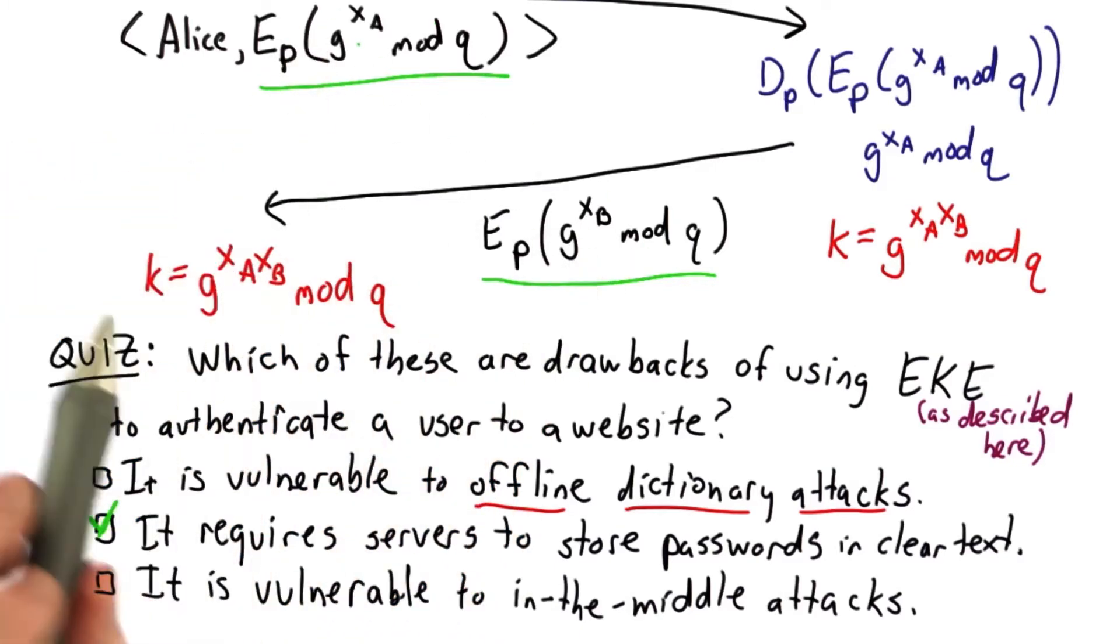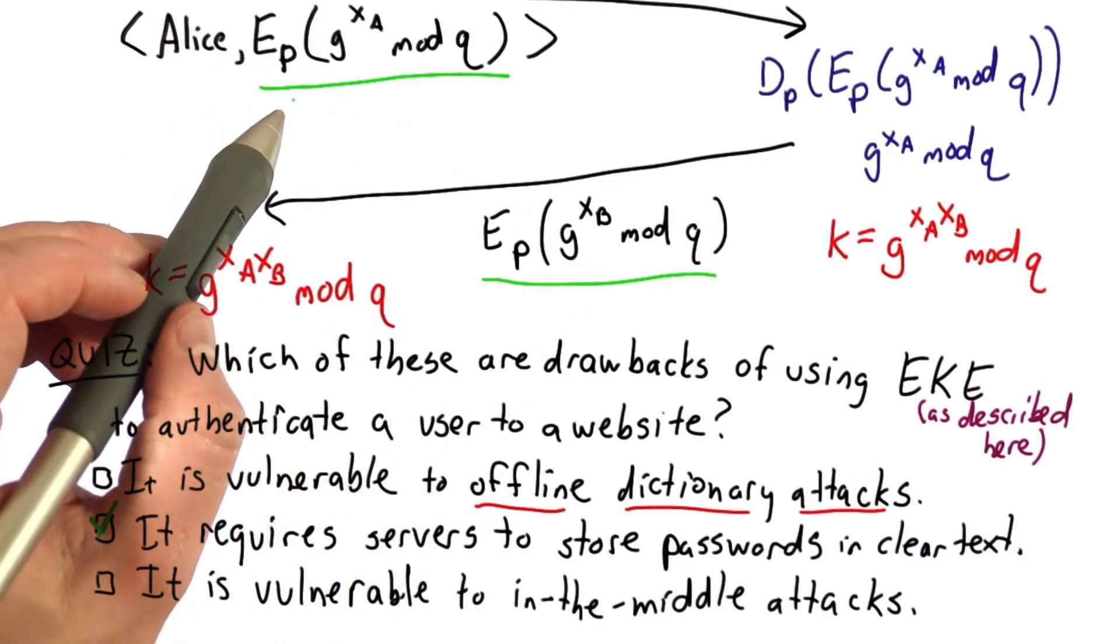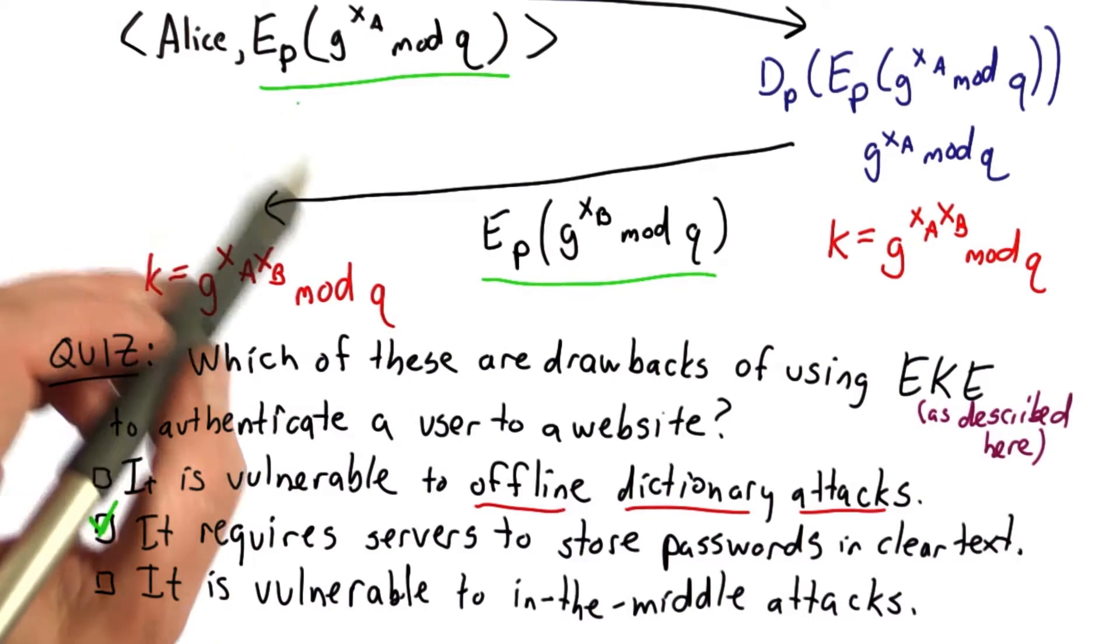An attacker who intercepts these messages could try all possible passwords in the dictionary, even if one of those is correct, the attacker couldn't tell which.